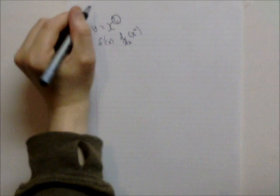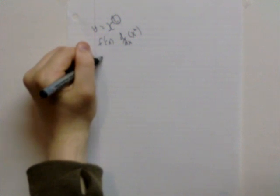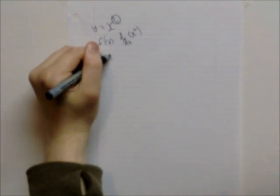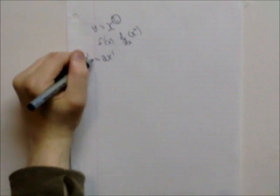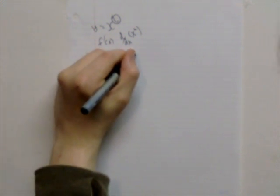So for the derivative, you just take this and you put it in front of the letter. And then this, you minus it by 1, so that becomes a 1. So basically, y prime equals 2x to the 1, or you can equals 2x.